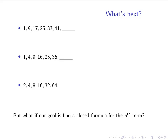The first exercises in the book have you try to find the next number in a sequence, which means you just have to see the pattern in any way at all. In this first problem, if you look at the differences between successive entries, we're adding eight every time to get the next entry, which means the next item should be 49.